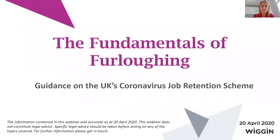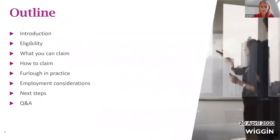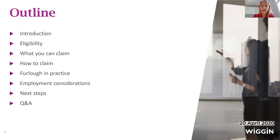Moving on to the first slide, which is essentially an outline giving you an overview of what we're going to cover. First, we'll start with a helicopter view of the scheme itself, covering the main aims, policy objectives, and key features. Seth will then run through the eligibility criteria — which companies can apply for a grant and which employees qualify. We'll then look at exactly what you can claim per month per qualifying employee.